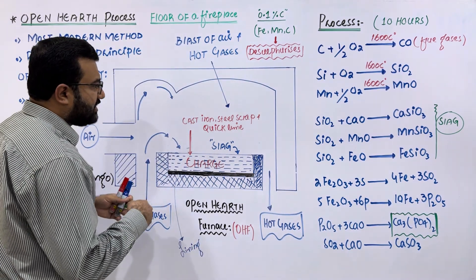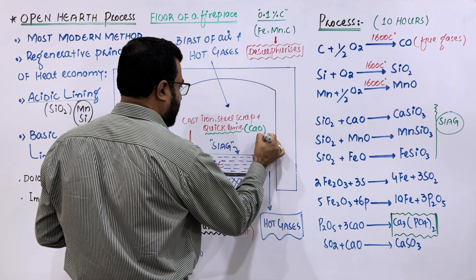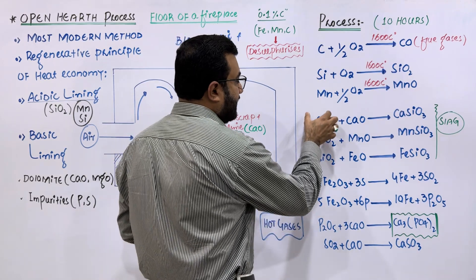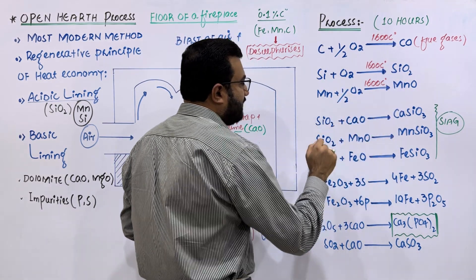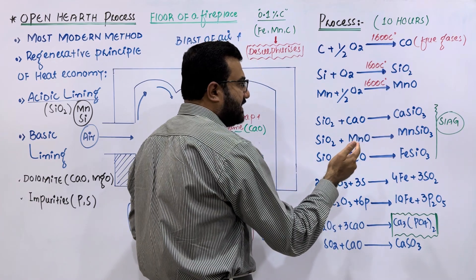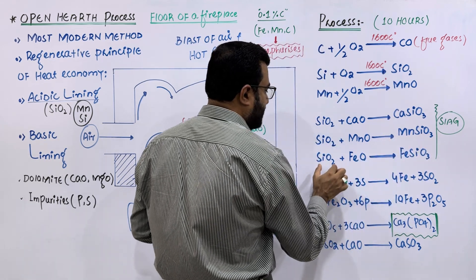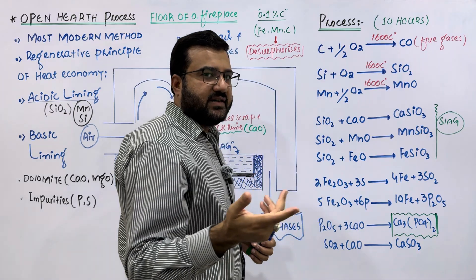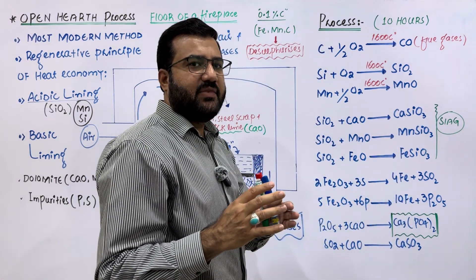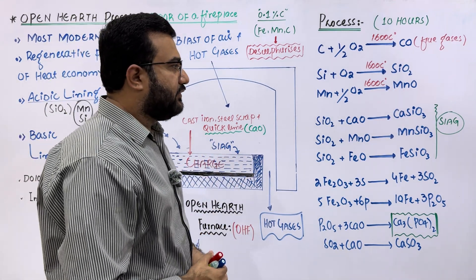The charge in the open hearth furnace also contains quicklime (calcium oxide), which is the slag-forming agent. Once silica is formed by oxidation of silicon and manganese oxide is produced, silica reacts with calcium oxide to form calcium silicate; silica reacts with manganese oxide to form manganese silicate; and silica reacts with iron oxide to form iron silicate. All three silicates form the slag, which floats on the surface of the charge and is then removed from the furnace.